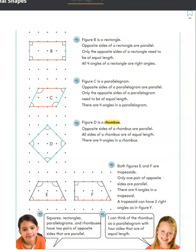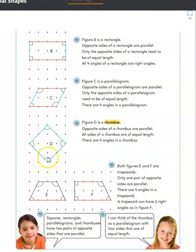Our next special quadrilateral is called a rhombus. In a rhombus, the opposite sides are parallel, all sides are of equal length — so it's kind of like a square — and there are also four angles. When I see a rhombus, to me it looks like a tilted square.